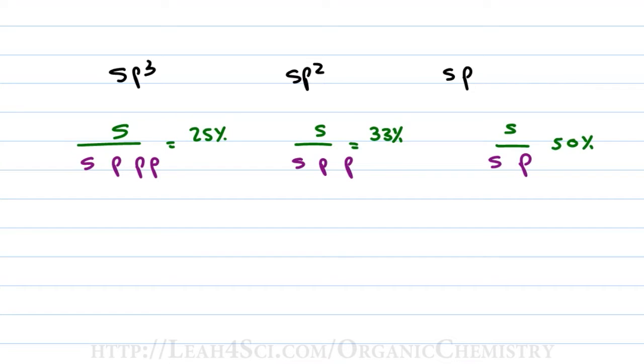This 25, 33, and 50% is the s character or the percent s that dominates in that orbital. So if we have only 25% s character, that means the conjugate negative electrons are not sitting that close to the nucleus, they're not going to be as stable. 33% s character has more s, stabilizing the conjugate a little more. 50% s character is about as much as you can get. And that means an sp hybrid has those negative conjugate electrons sitting much, much closer to the nucleus and making it much more stable.